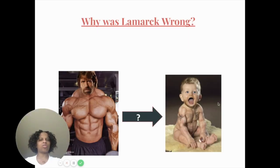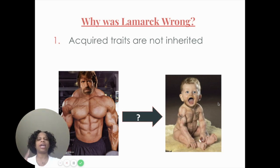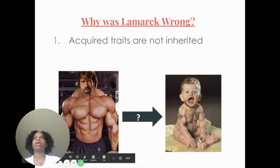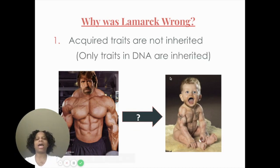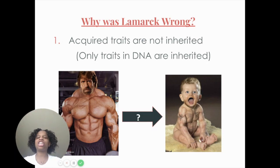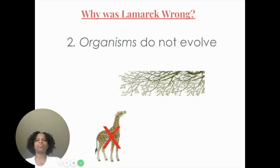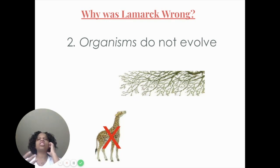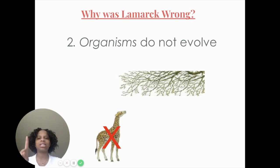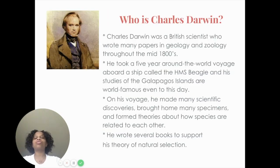So why was Lamarck wrong? Acquired traits are not inherited. Just because a male is a huge bodybuilder does not mean his offspring will be a huge bodybuilder — it's not going to happen. Only the traits that are actually in your DNA, your genes, are passed down to offspring. There has to be a genetic component. Another reason: in the theory of evolution, it's populations that are evolving and adapting over time, not one single organism.